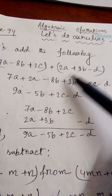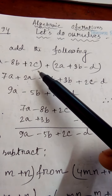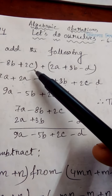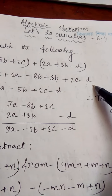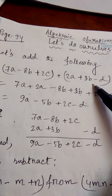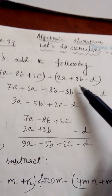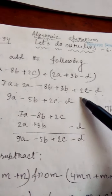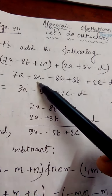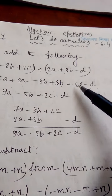We shall write the like terms together. Minus 8b plus 3b — those are like terms, so we shall write them together. But 2c and minus t — those are unlike terms, so we shall write these two unlike terms lastly. It is observed that while adding algebraic expressions, the like terms are brought together and then added. These are like terms, and these are unlike terms.